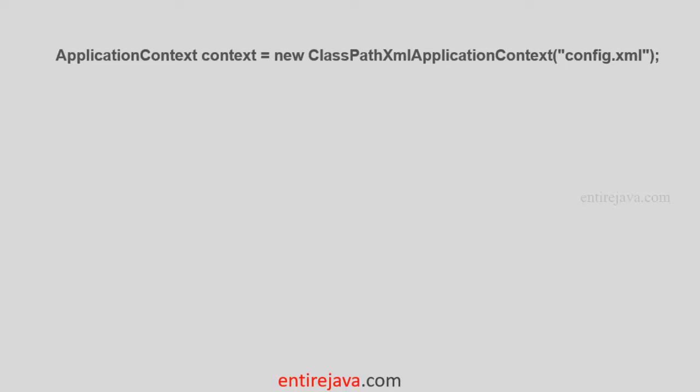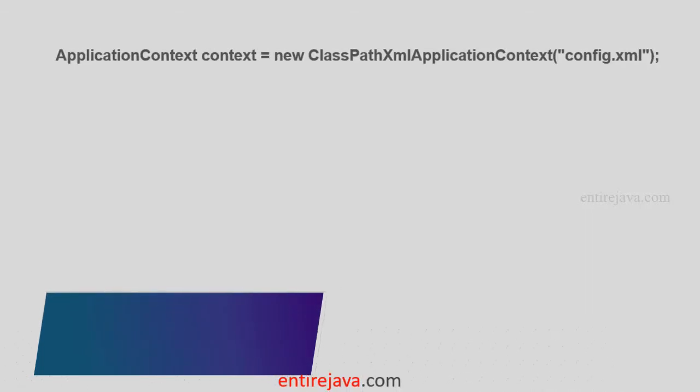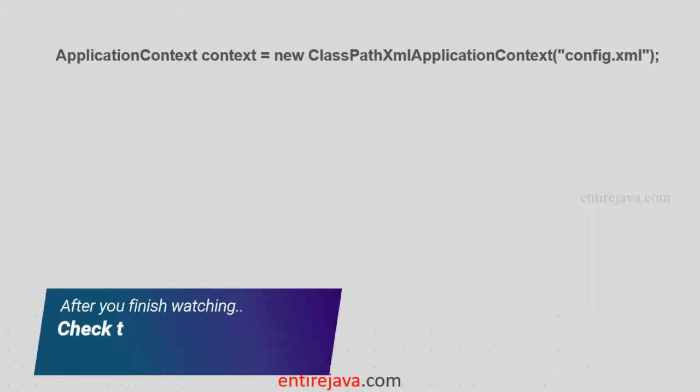In this video, we're going to talk about Bean Factory. So far, in our examples, we had used Application Context to load the IoC container and its beans. But there is something called a Bean Factory, which you can think of as a predecessor of Application Context, or in other words, a previous version of Application Context, which is lightweight with a lesser number of features.